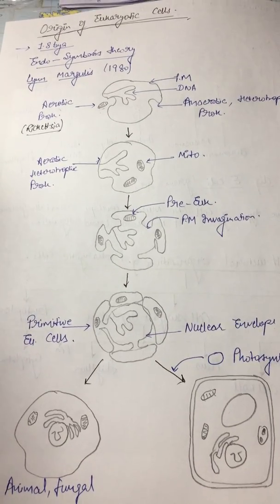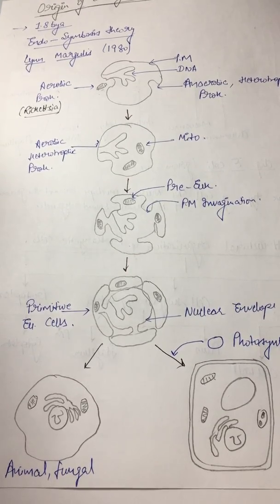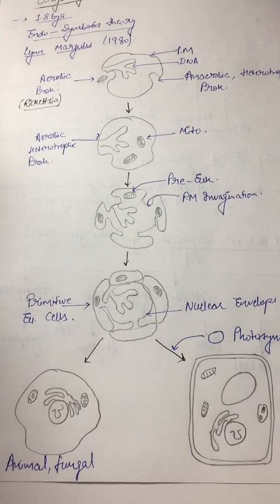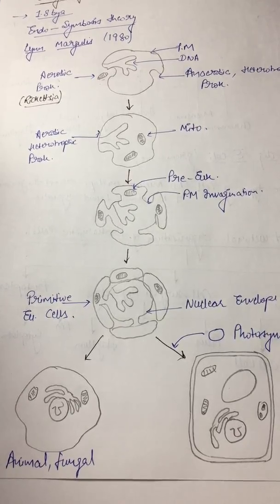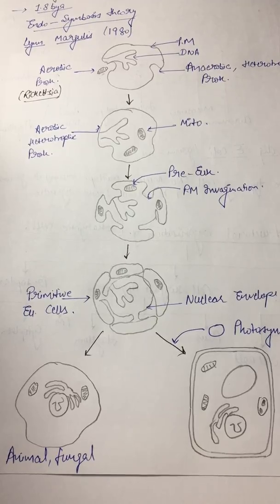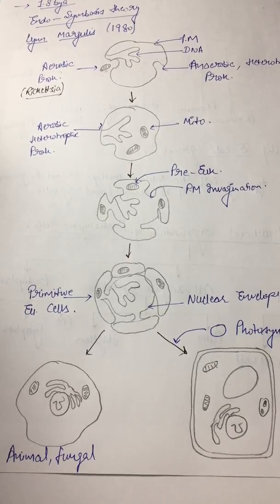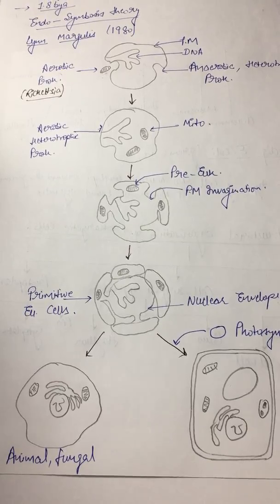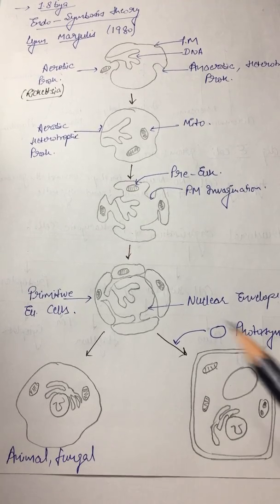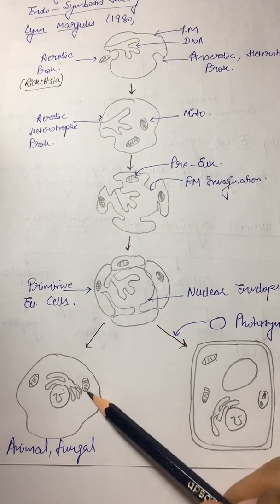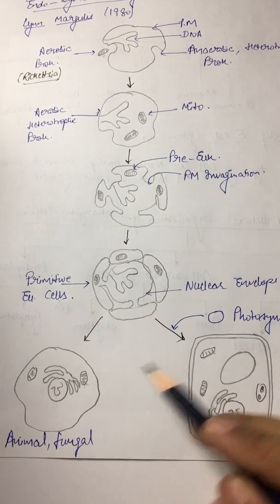Number one: the presence of genome in mitochondria and chloroplast. Second: double-stranded DNA which is circular, not bound to histone, in mitochondria and chloroplast. Prokaryotic type replication, transcription, translation, and ribosome.